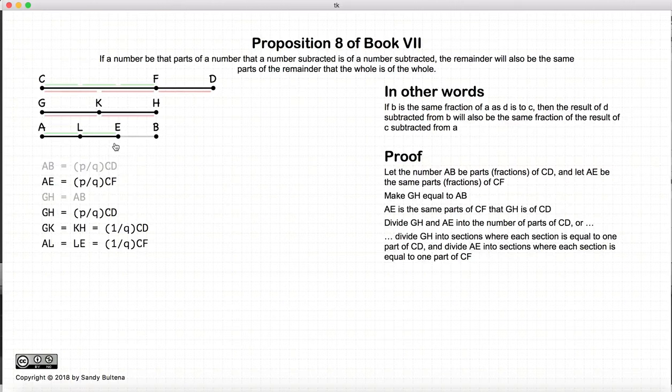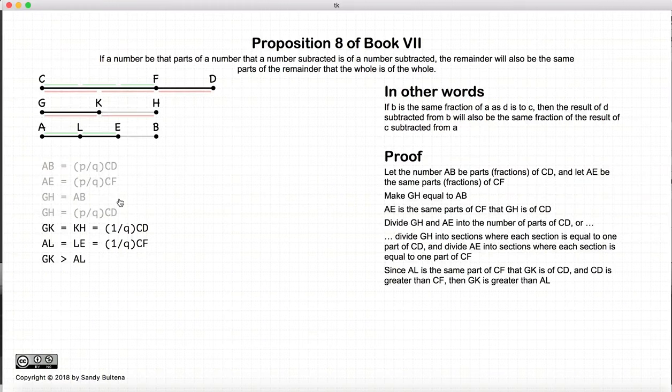If it were 3 quarters, we'd be dividing by 3. So now we have GK equals KH equals 1 part of CD, so it's 1 part of CD, and AL is equal to LE, and it's 1 part of CF.